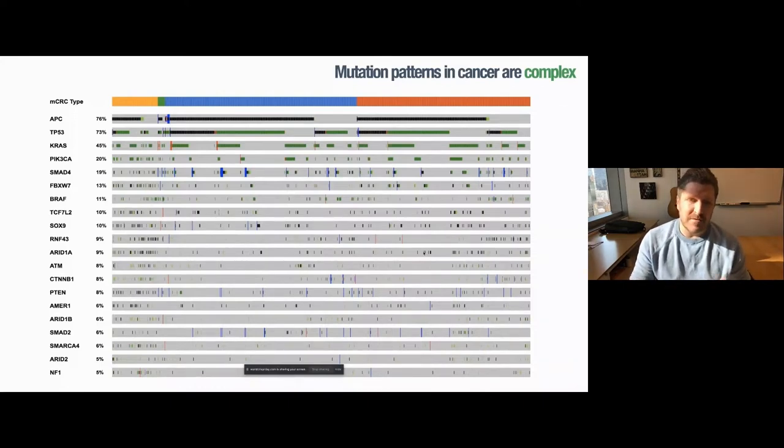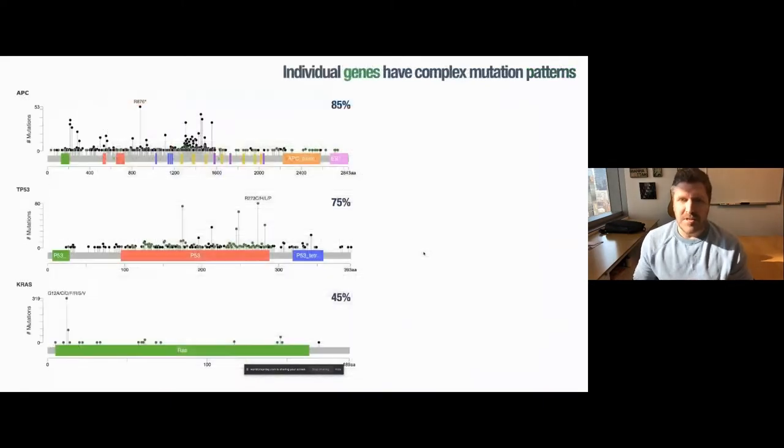The second level of complexity that we're trying to understand is that within individual genes, the mutation patterns are also complex. These are the three most commonly mutated genes in colorectal cancer. APC occurs in over 80% of sporadic and familial colon cancers. P53 is very common, particularly in advanced disease, and KRAS is in almost 50% of cancers. I show these three examples not just because they're common, because they represent three different kinds of mutation patterns.